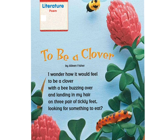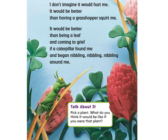We're going to start with a poem called 'To Be a Clover' by Aileen Fisher. I wonder how it would feel to be a clover with a bee buzzing over and landing in my hair on three pair of tickly feet looking for something to eat. I don't imagine it would hurt me — it would be better than having a grasshopper squirt me. It would be better than being a leaf and coming to grief if a caterpillar found me and began nibbling, nibbling, nibbling around me.